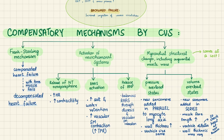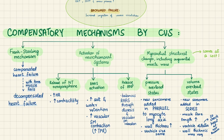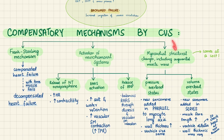The renin-angiotensin-aldosterone system also becomes activated, increasing salt and water retention, thus increasing overall blood volume and total peripheral resistance to maintain blood pressure. However, this has a detrimental effect because the increased blood volume still has to be dealt with by the failing heart. In contrast, atrial natriuretic peptide released by the atria balances RAAS activation by causing diuresis — excreting water and salt — and causing smooth muscle relaxation.